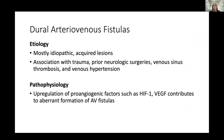These lesions are generally considered idiopathic and acquired. However, they have an association with a number of pathologic states, including trauma, prior neurosurgery, venous sinus thrombosis, and venous hypertension. Any of these conditions can lead to upregulation of pro-angiogenic factors like hypoxia-inducible factor 1 or VEGF, which promotes the formation of these aberrant connections between arteries and veins.